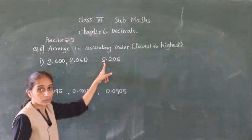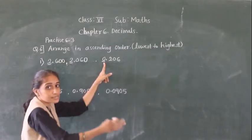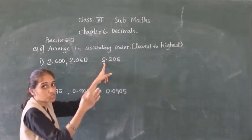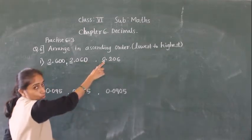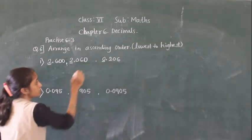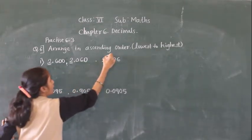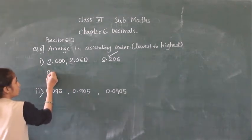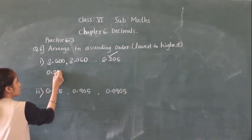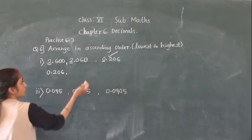We have to arrange in ascending order, small to big. So which is the smallest whole number part? 0 is the smallest. So write this number first: 0.206.